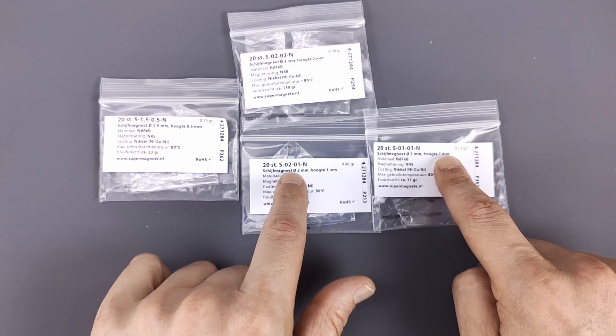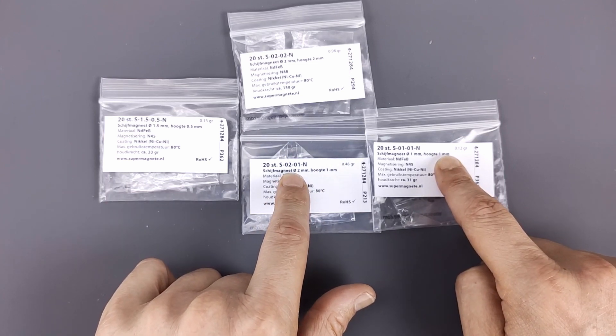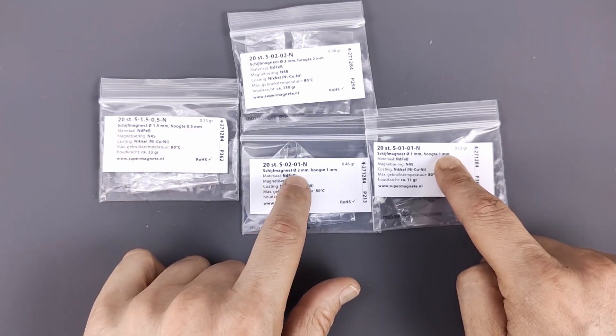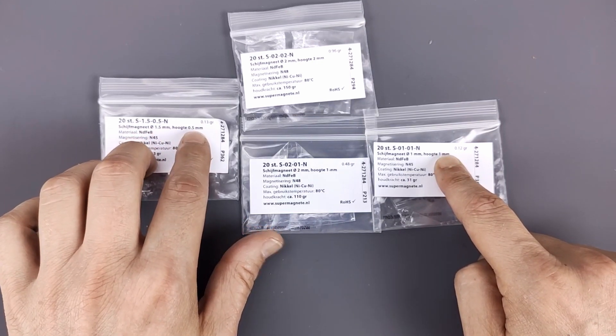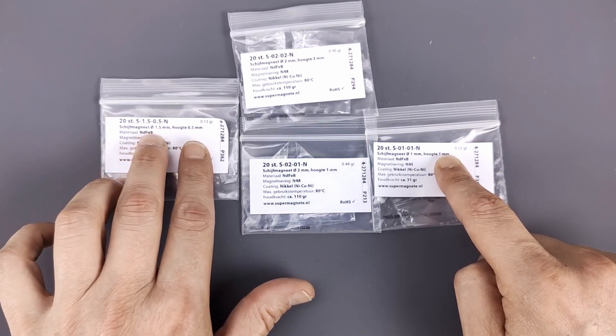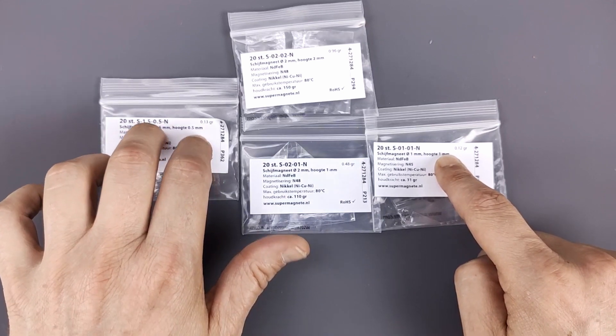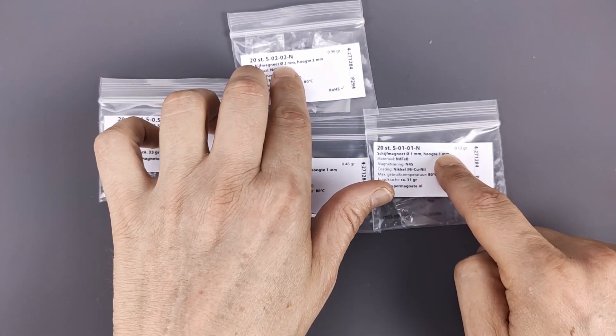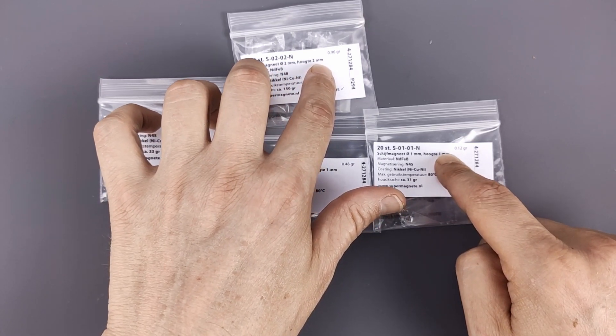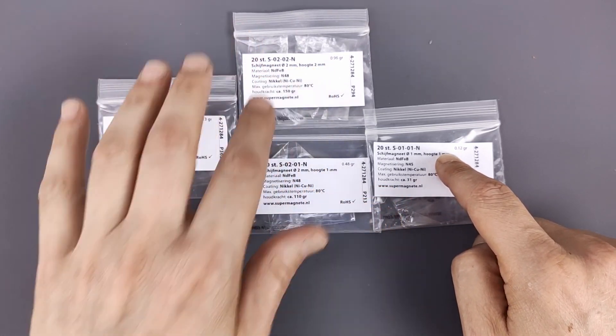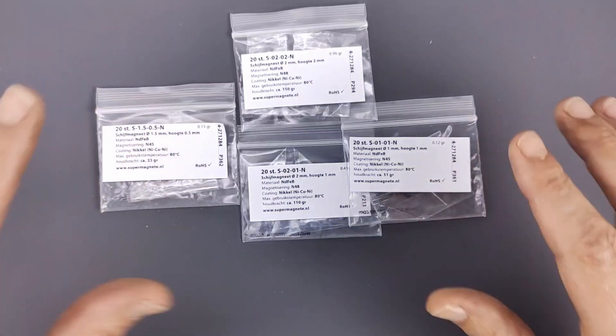This one has a diameter of one millimeter and a height of one millimeter. This one also has a height of one millimeter but a diameter of two millimeters. This one, a height of 0.5 millimeters but a diameter of 1.5 millimeters.